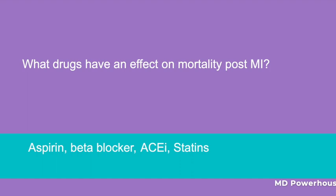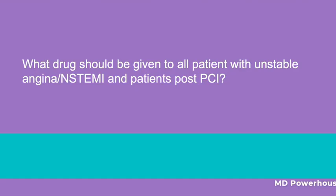What drug should be given to all patients with unstable angina or NSTEMI and patients post-PCI? Clopidogrel. Recall that it has an antiplatelet effect by acting as an antagonist of ADP. It is given for 30 days after placement of a bare metal stent or up to 1 year after a drug-eluting stent following PCI. Clopidogrel helps to prevent sub-acute stent thrombosis.